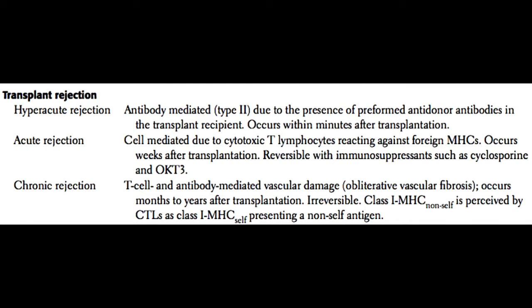In terms of transplant rejection, there are three types you should be familiar with for Step 1: hyperacute rejection, acute rejection, and chronic rejection. In addition, there is a condition called graft versus host disease, which is not really a rejection but rather a complication of transplantation.